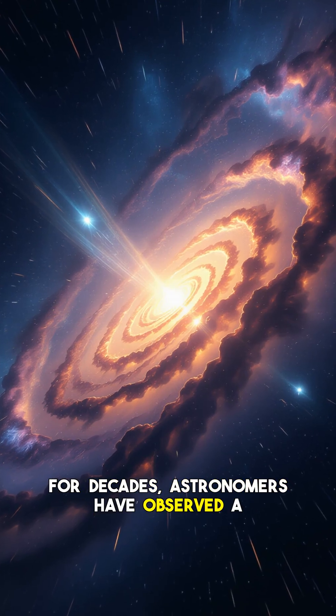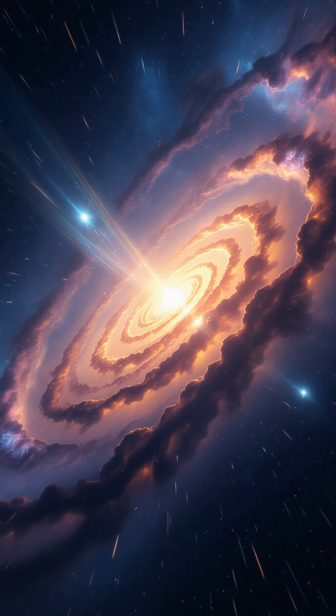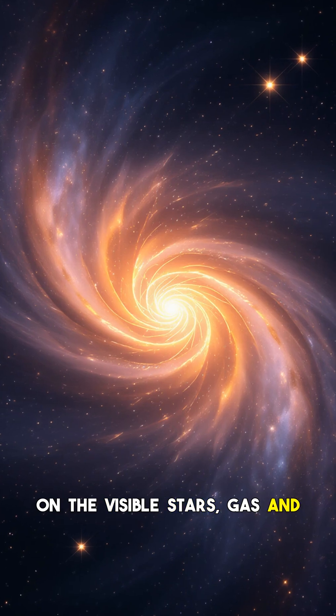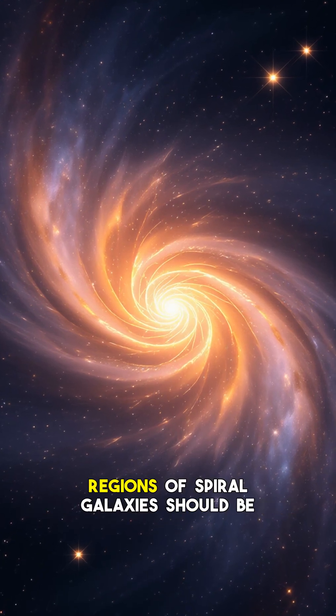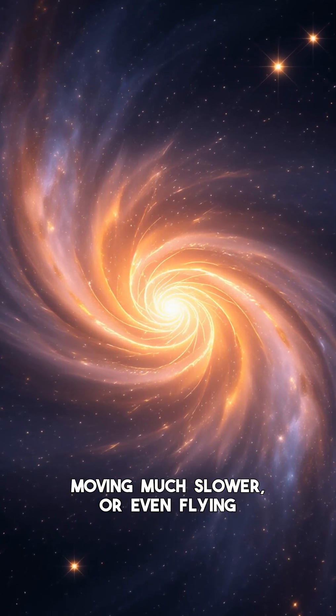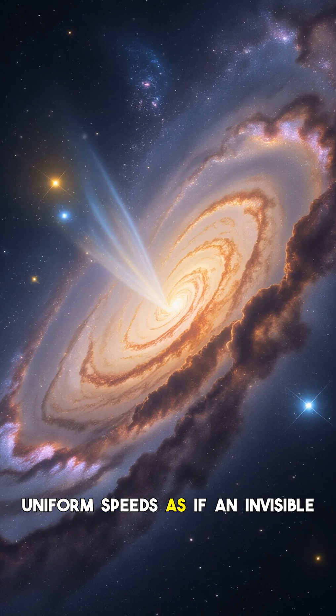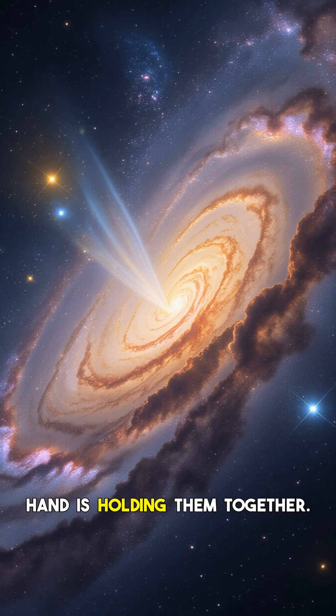For decades, astronomers have observed a perplexing phenomenon. Galaxies are spinning too fast. Based on the visible stars, gas and dust we can detect, the outer regions of spiral galaxies should be moving much slower or even flying apart, yet they rotate at nearly uniform speeds as if an invisible hand is holding them together.